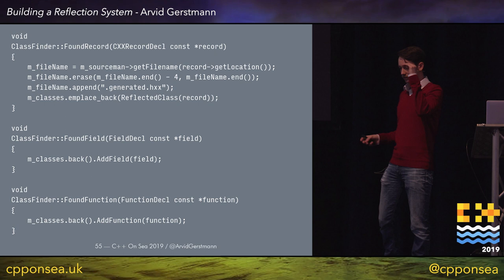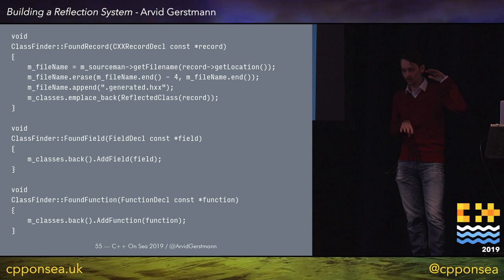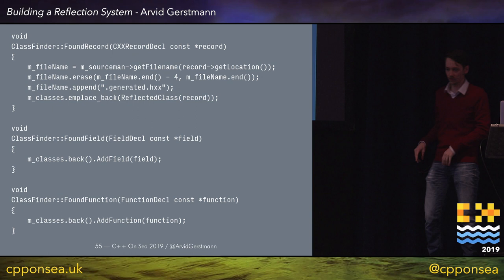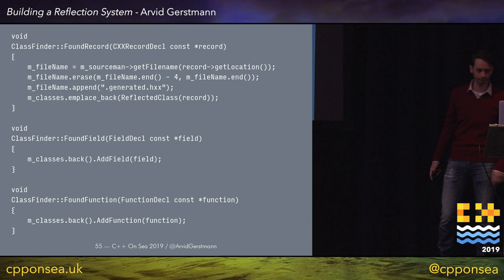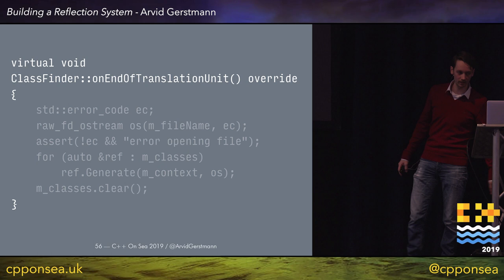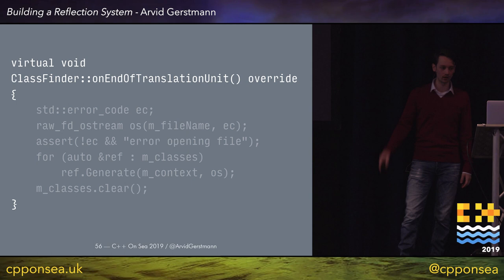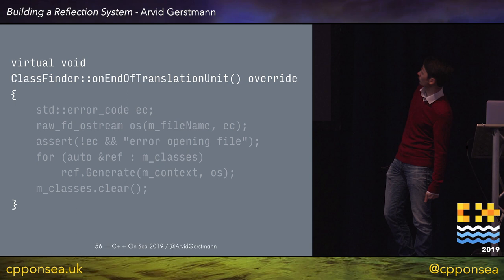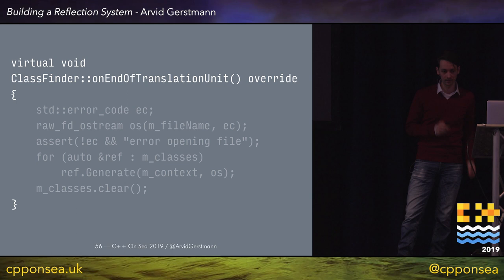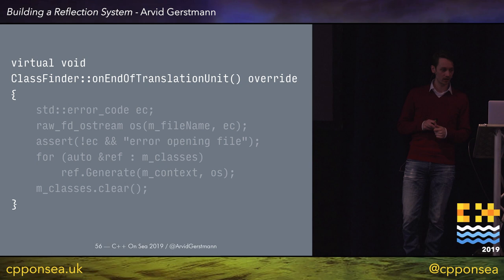We run this tool and get the AST of our user struct — essentially the same output as before but reduced from 106,000 lines to roughly 50 lines. This is all the information we actually need. Now let's change our implementation. We start by creating a new header file for every record we find, getting the filename from the source and appending .generated.hxx. We create a new instance of the reflected class and push it into a vector. For each field and function, we push them back into the vectors of the reflected class.